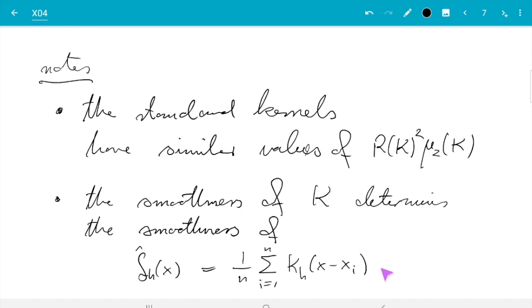And the main message is any of the kernels we discussed will be good. Theoretically, the Epanechnikov kernel is optimal, unless you need the estimate f̂ to be smooth. In this case, you need to take a smooth kernel instead. Good!